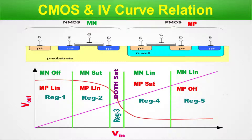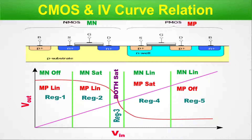In region 4, MN is in the linear region and MP is in the saturation region. In region 5, MN is in the linear region while MP is OFF (in cutoff). Now you are well equipped to answer the interview question about how CMOS switching happens with respect to the MOSFET operation of each individual component — the NMOS and the PMOS.